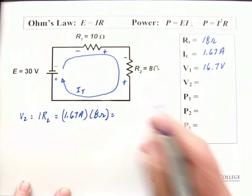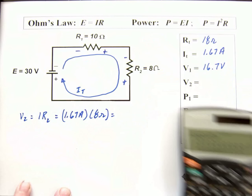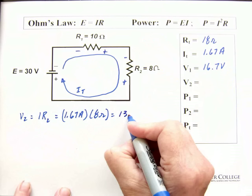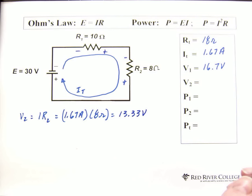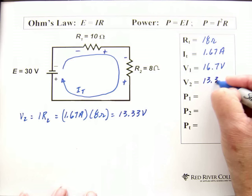So, we take our 1.67 and multiply it by 8. And we get 13.33. 13.33 volts. Okay, so that's voltage 2.